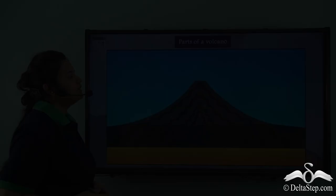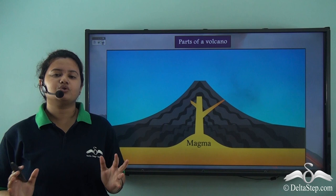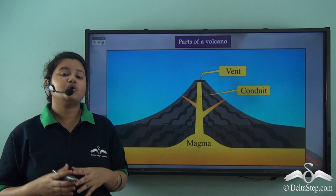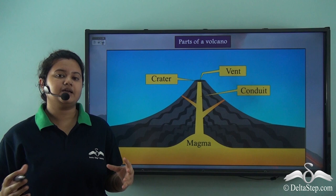So we just understood how a volcano is formed. Now let us learn about various parts of a volcano. The source of a volcano is the magma chamber present beneath the Earth's surface. So what is a magma? A magma is a reservoir of molten rocks and gases present beneath the Earth's surface and these molten rocks try to escape through cracks or pipes or passages.